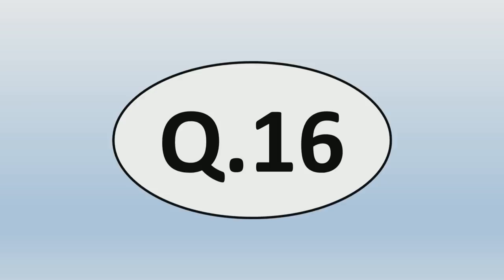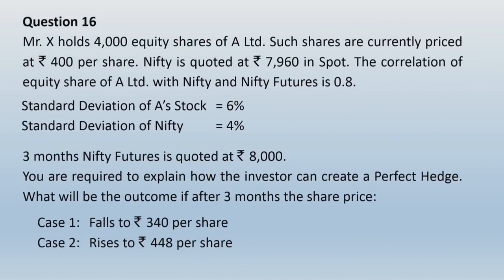Let us take up question number 16. Mr. X holds 4,000 equity shares of A Limited, currently priced at Rs. 400 per share. Nifty is quoted at Rs. 7,960 in the spot market. The correlation of equity shares of A Limited with Nifty and Nifty futures is 0.8. Standard deviation of A's stock is 6%, and standard deviation of Nifty is 4%. The 3-month Nifty futures is quoted at Rs. 8,000. We are required to explain how the investor can create a perfect hedge, and determine the outcome if after 3 months the share price falls to Rs. 340 or rises to Rs. 448.